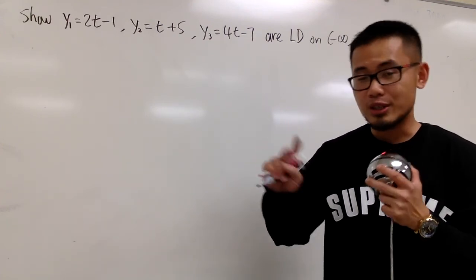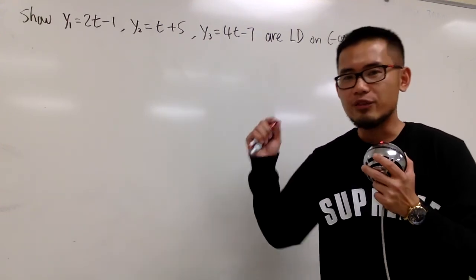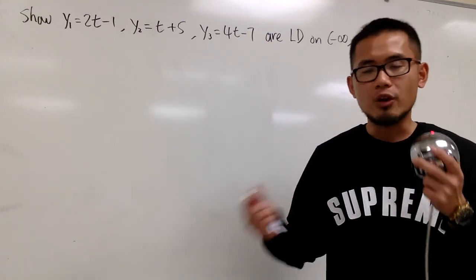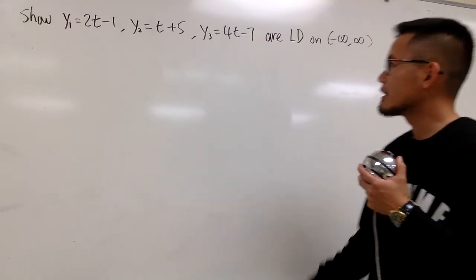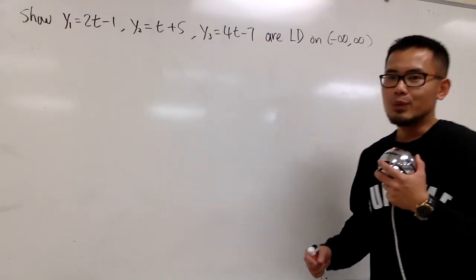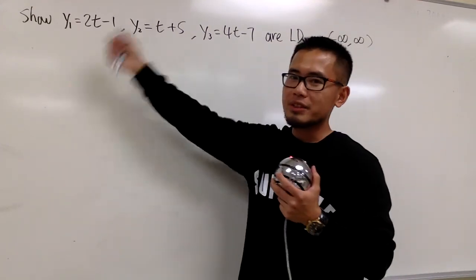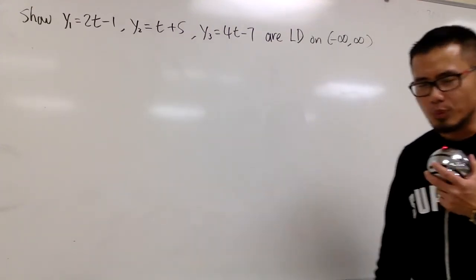To do that for two functions, all you have to do is check if one function is a constant multiple of the other. But for three functions like this, we cannot just say this is a constant multiple of the other. It's not that straightforward anymore.